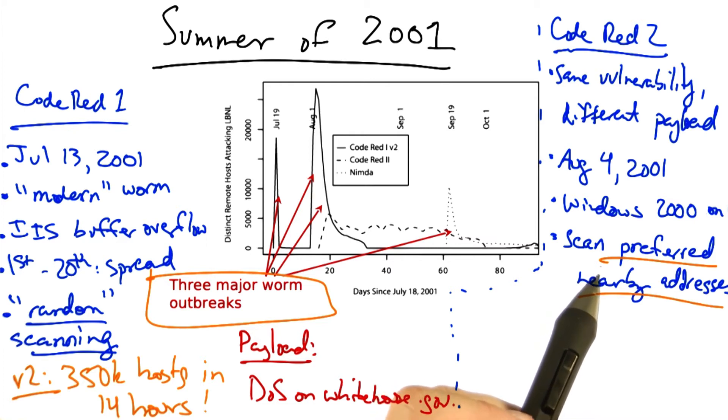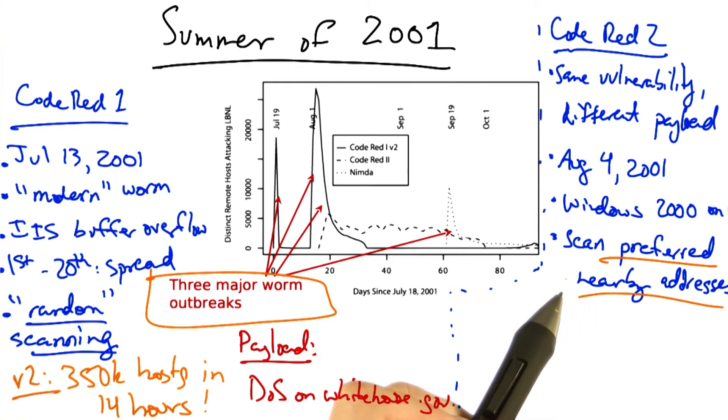because the same administrator that failed to patch the compromised machine might have other machines on the same network that were also vulnerable. This notion of preferential scanning can speed up infections in some cases by increasing the probability that scanning will find another vulnerable host.